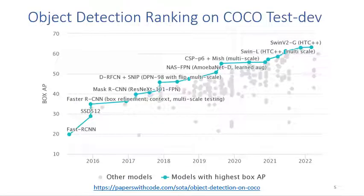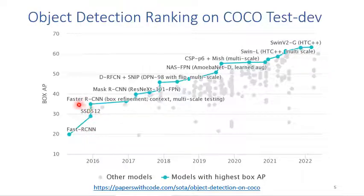Object detection has high commercial value and is a very competitive research field. You can check the latest object detection ranking on the Papers with Code site — you can check current rankings and also download the code. In the beginning, the winners were Fast RCNN and Faster RCNN. After that, YOLO v4 was the best in 2020, because YOLO v4 was published by Taiwanese researcher Dr. Wang Jianyao. Dr. Wang proposed a new CNN model called CSPNet. YOLO v4 used CSPNet as the backbone and achieved the highest accuracy in 2020.